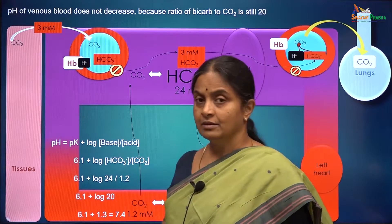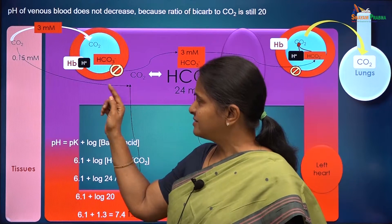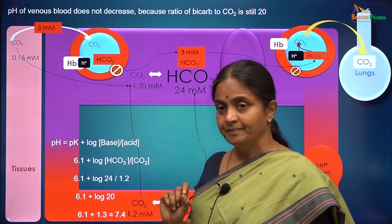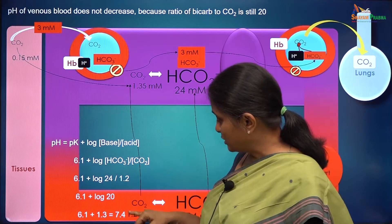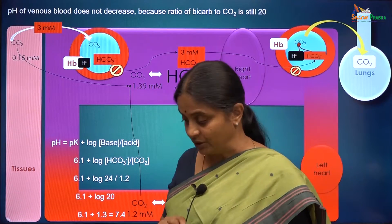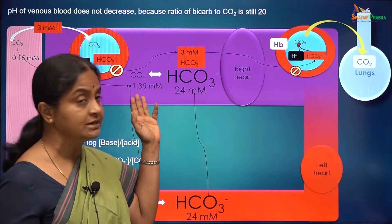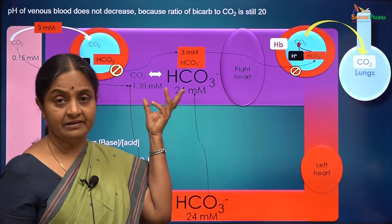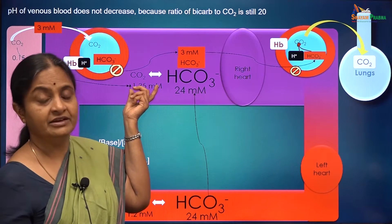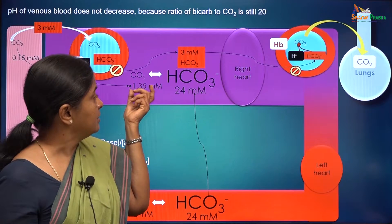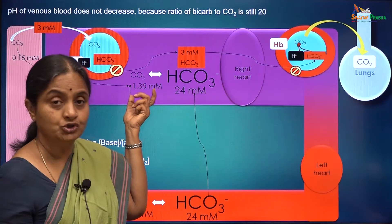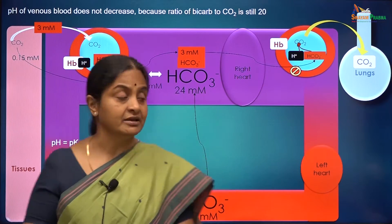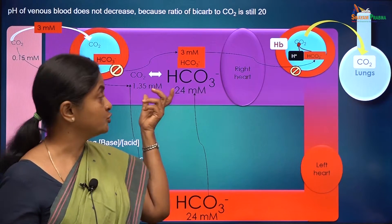Does that excess bicarbonate disturb pH? Not really, because just 0.15 millimoles per litre is allowed to remain dissolved as carbon dioxide, so the venous carbon dioxide concentration is 1.2 + 0.15 = 1.35 millimolar. The ratio of bicarbonate to carbon dioxide still remains 20 even in venous plasma. There seems to be some mechanism that dictates how much carbon dioxide can remain dissolved in venous plasma so as to maintain this ratio and not disturb the pH of blood.